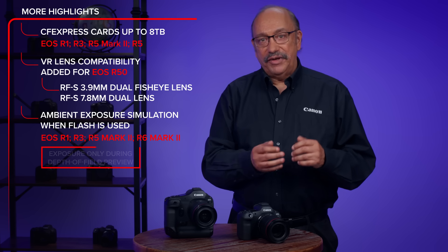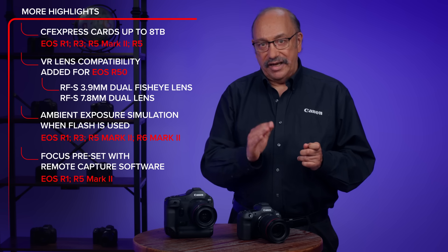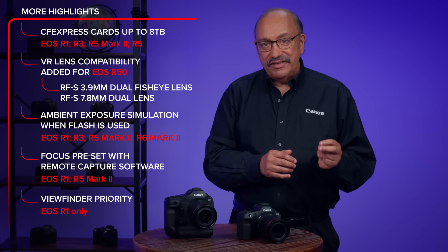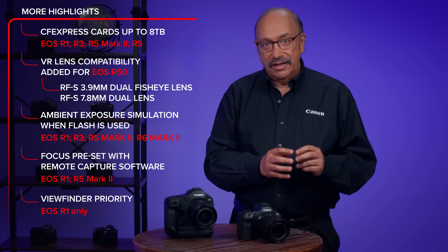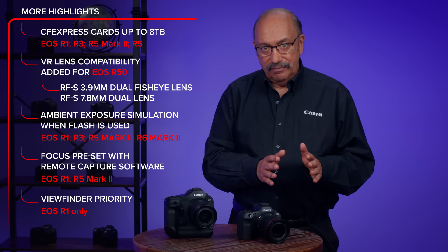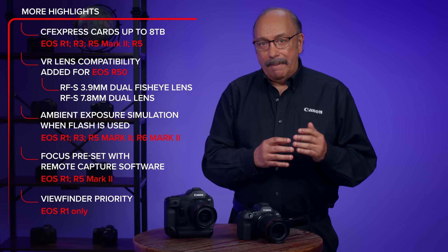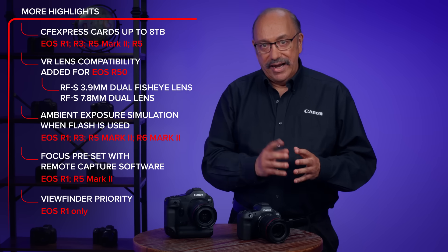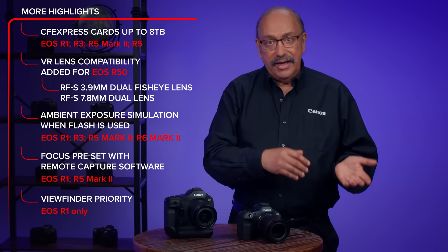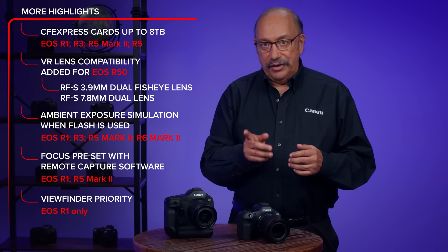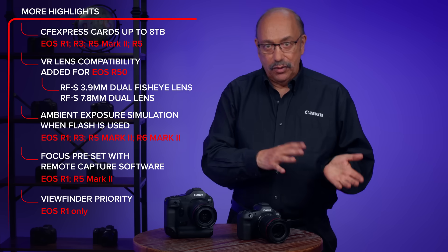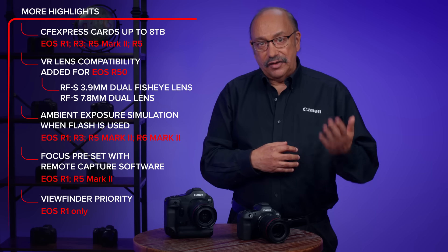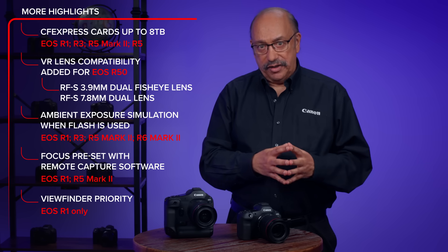During remote shooting, it will now be possible to preset focus distance when using Canon's remote capture software. EOS R1 users will find a new menu item added in the red shooting menu area: Viewfinder Priority Mode. With this active, the camera will immediately activate the eye-level viewfinder if it detects your face is near the camera, and will display menus and image playback on the rear LCD screen once you press the menu or playback buttons. In other words, it effectively changes the displays so that the camera now works similarly to how digital SLRs worked in the past.